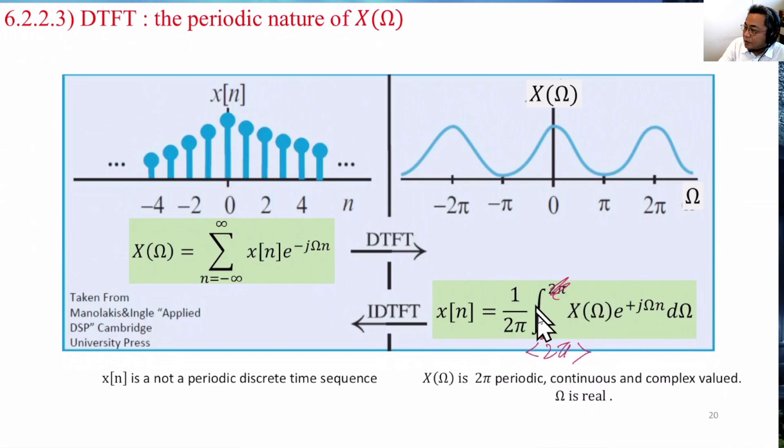Now, why is this so? Let us examine the equation for the analysis, and then we will plug in different values of omega. And we will see that when X(Ω + 2π), it will be the same as X(Ω), to prove the claim that X(Ω) is 2π periodic.